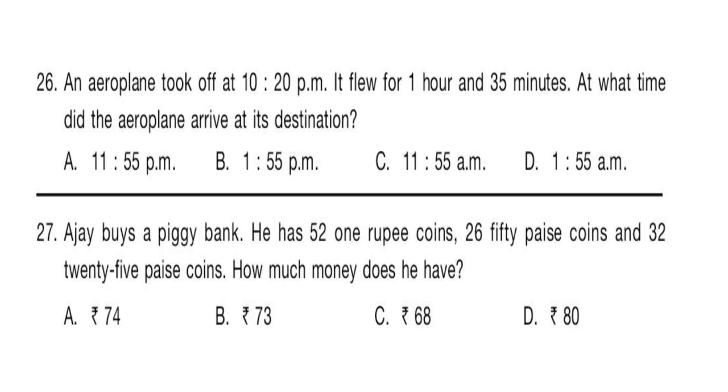Question 26: An aeroplane took off at 10:20 pm. It flew for 1 hour and 35 minutes. At what time did the aeroplane arrive at its destination? Question 27: Ajay buys a piggy bank. He has 52 one rupee coins, 26 fifty paise coins and 32 twenty-five paise coins. How much money does he have?